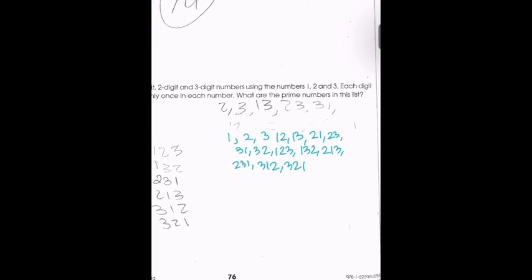Out of all those combinations, we circle the prime numbers. The prime numbers are 2, 3, 13, 23, and 31.